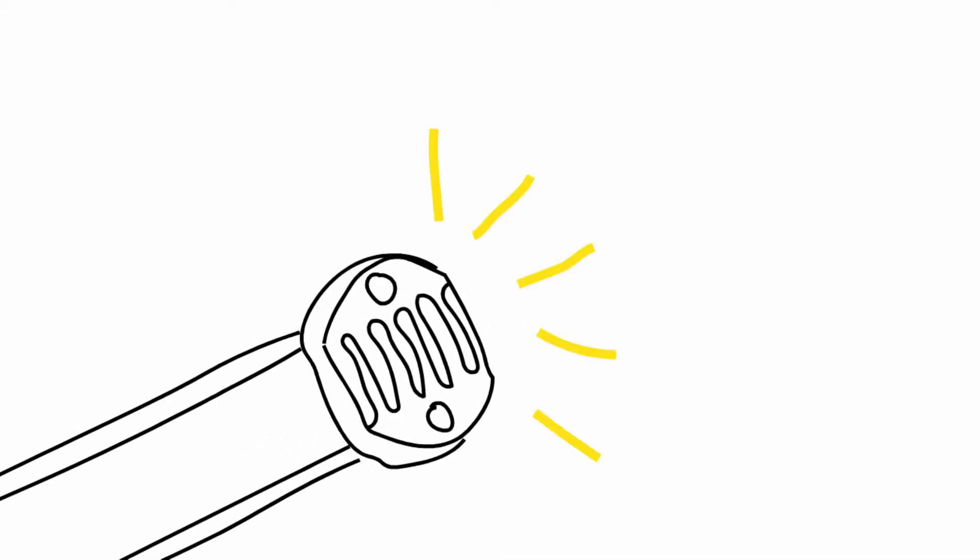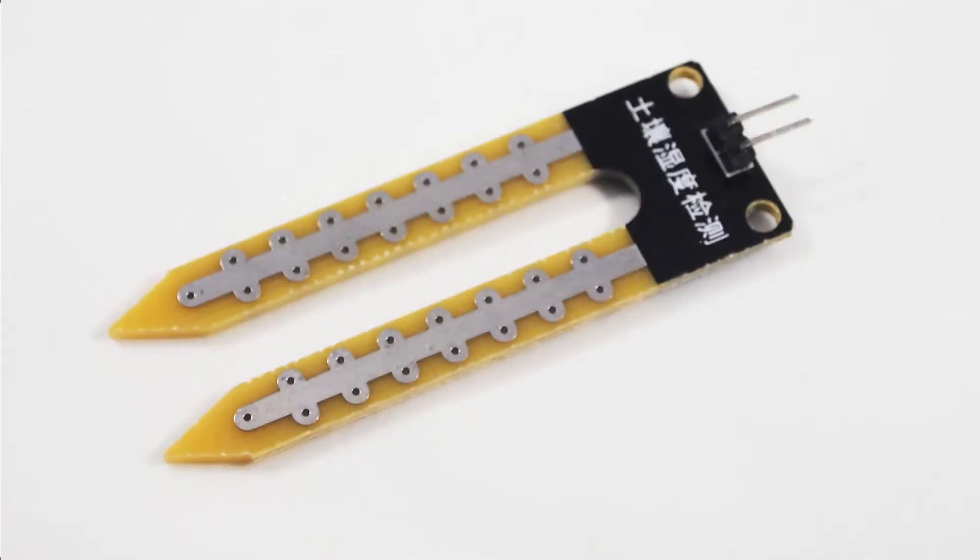For example, photoresistors are variable resistors that vary based on the amount of light they are exposed to. Soil moisture sensors' resistance levels vary based on the amount of moisture they are exposed to.